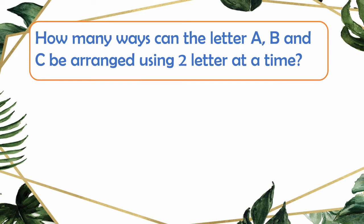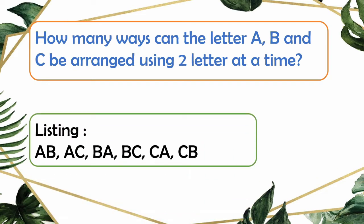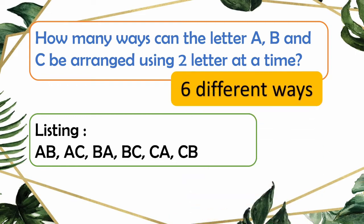How many ways can the letters A, B, and C be arranged using two letters at a time? Now we will use only two letters from A, B, and C. Using the listing method, we have the following arrangements: A-B, A-C, B-A, B-C, C-A, and C-B. We also got six different ways of arranging the letters using two letters at a time.